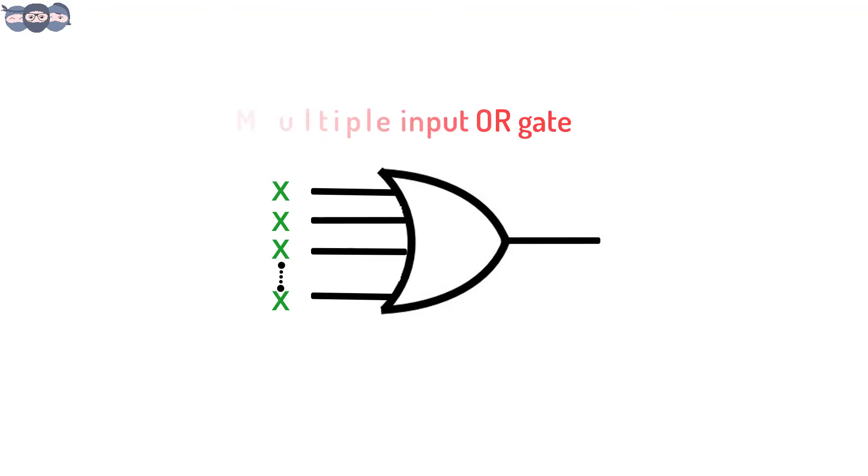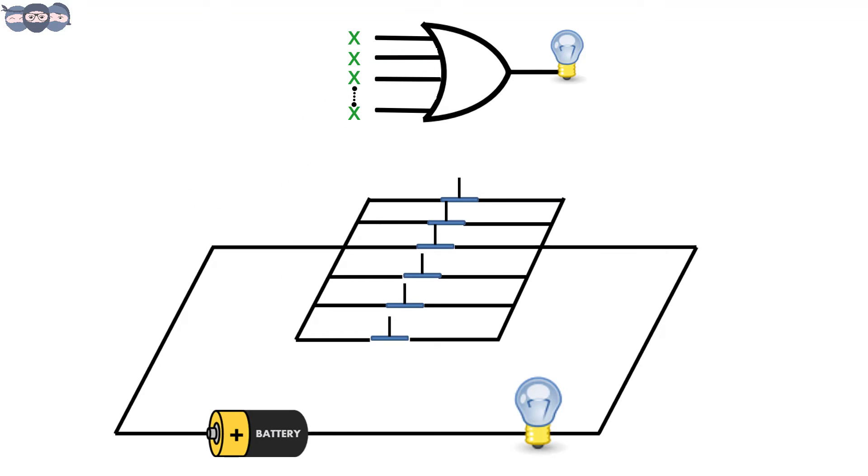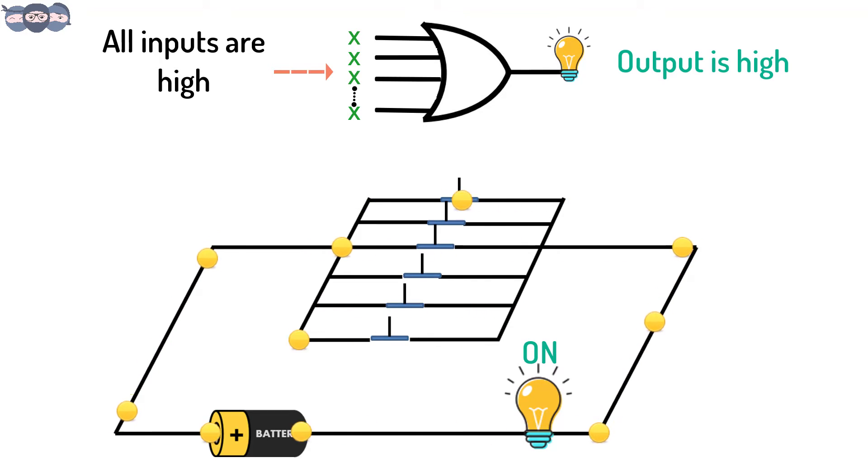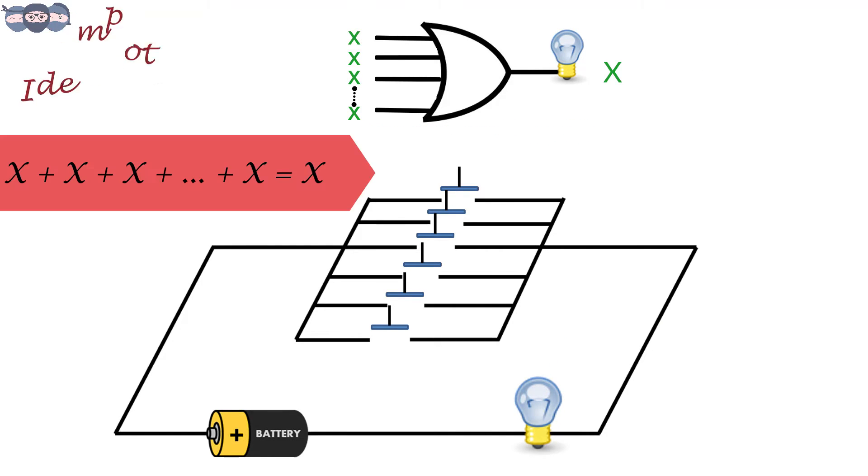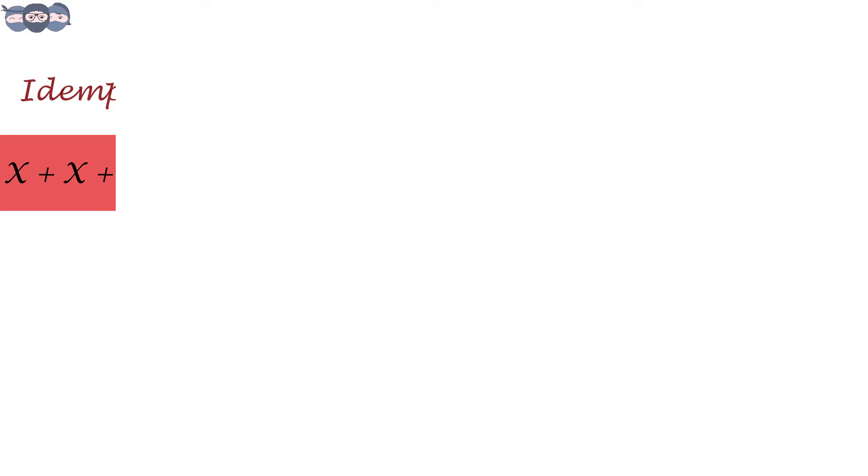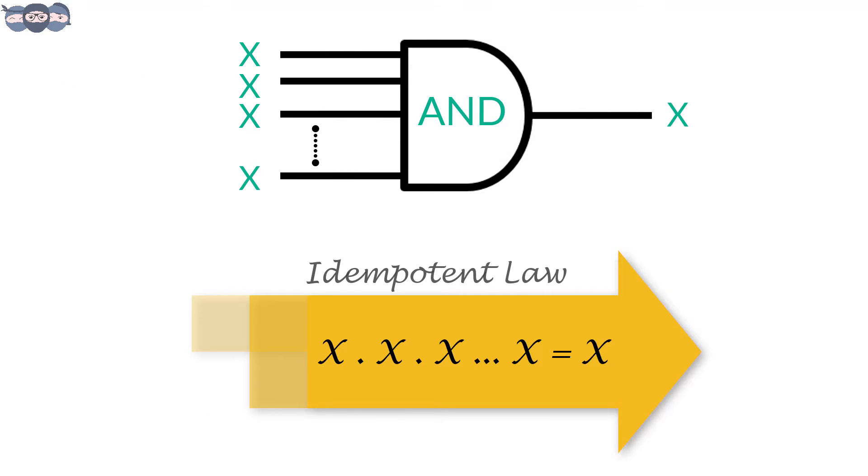Consider a multiple input OR gate. Let all the inputs be at the same logic level. Let us call them X. If all the inputs are at logic 1, output is high. And if all the inputs are low, the output is low. The logic level present at the input is given at the output. Thus, X or X or X and so forth is X. The same logic applies for an AND gate. X and X and X and so forth gives X.